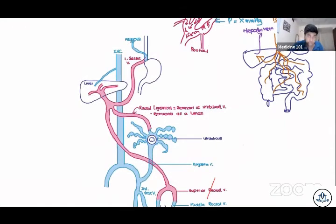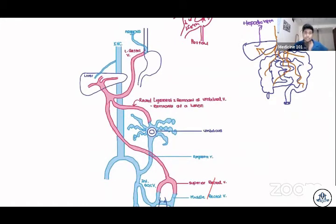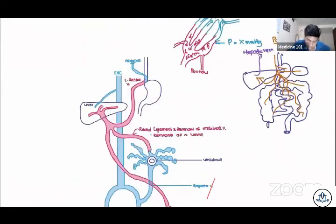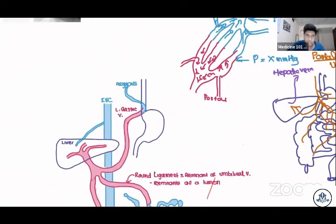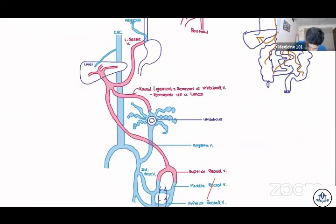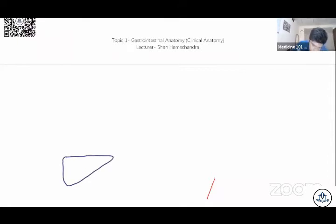Next, let's look at the locations where these connections are. I'll draw this diagram again, and when it comes to labeling I'll use the diagram I drew earlier. So we have the liver, and it gives rise to three blood vessels that we need: the left gastric vein and others.